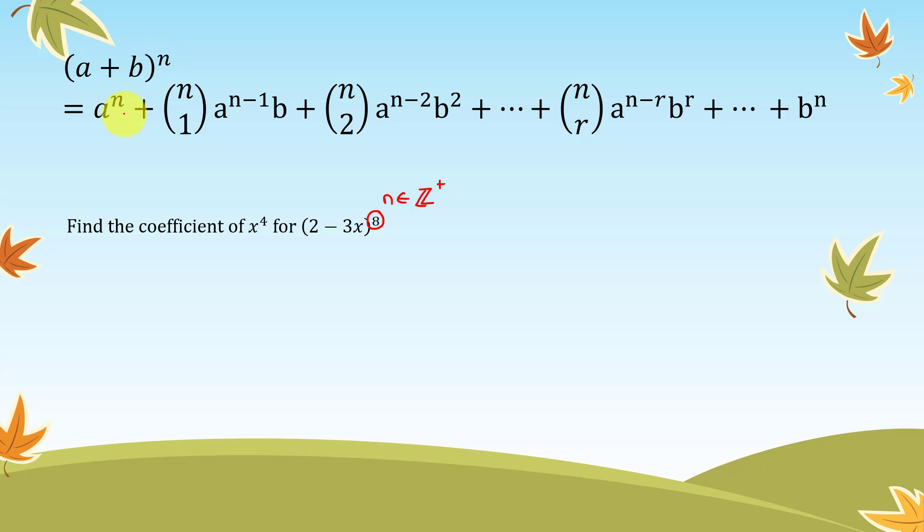We have (a plus b) to the power of n equals a to the n plus nC1 times a to the n minus 1 times b, plus nC2 times a to the n minus 2 times b square, plus dot dot dot, nCr times a to the n minus r times b to the power of r, plus dot dot dot, plus b to the power of n.